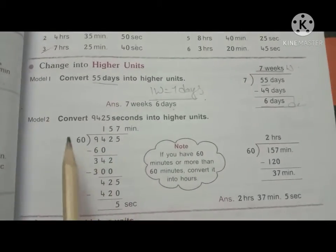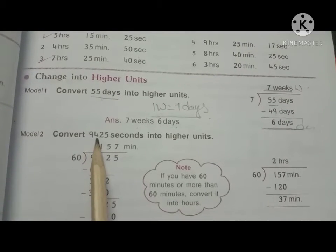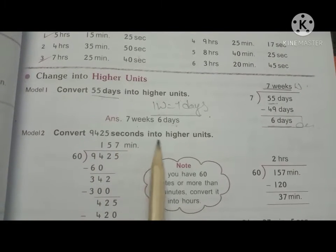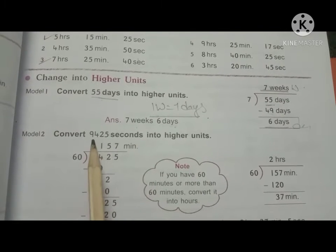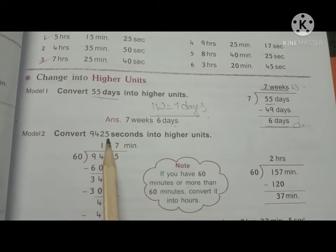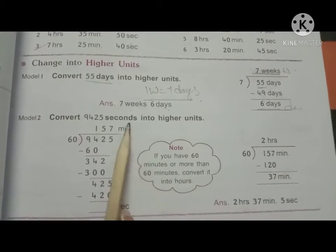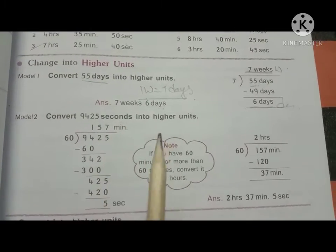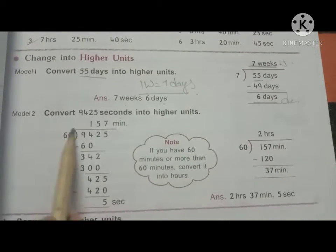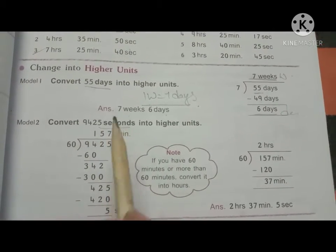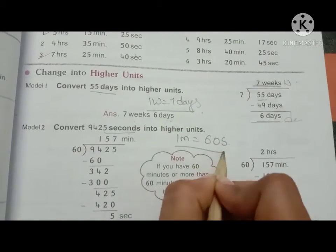Next, model 2 — another model. Convert 9,425 seconds into higher units. Here we have to convert 9,425 seconds. Since this is in seconds, first we have to convert it into minutes. We know that 1 minute is equal to 60 seconds.